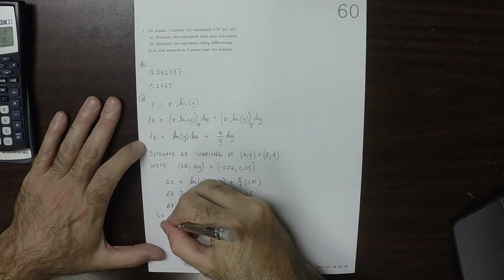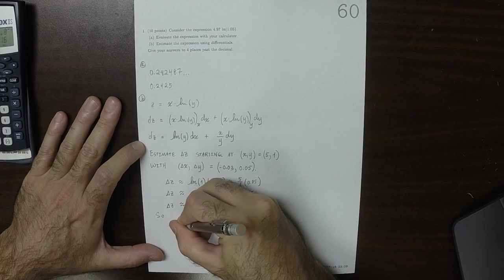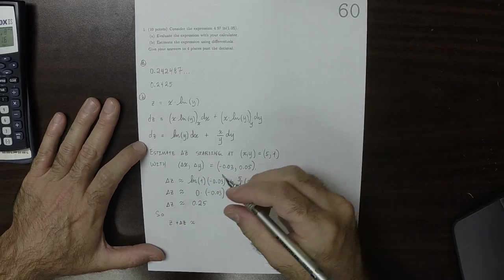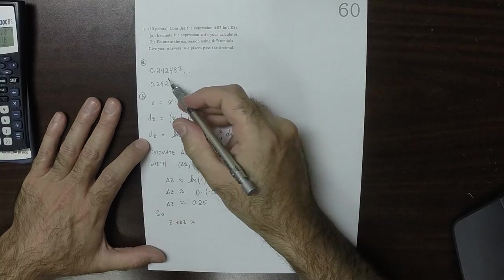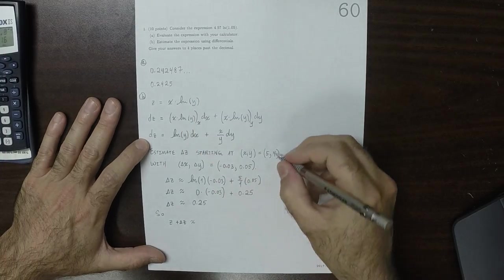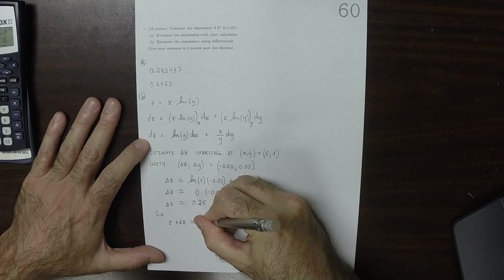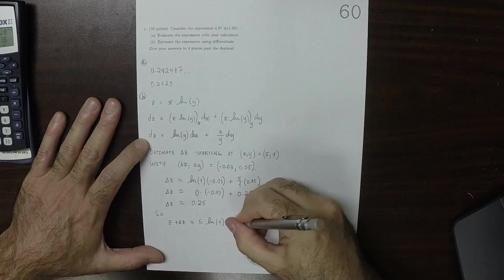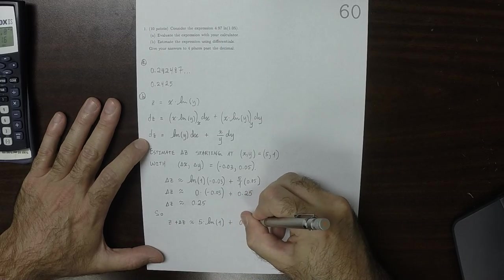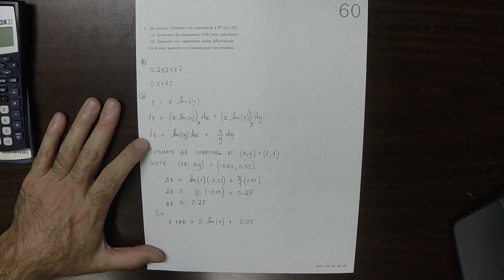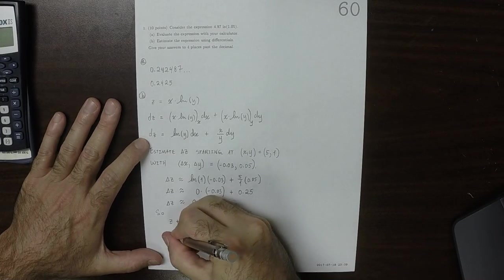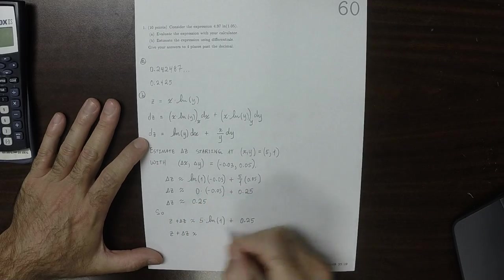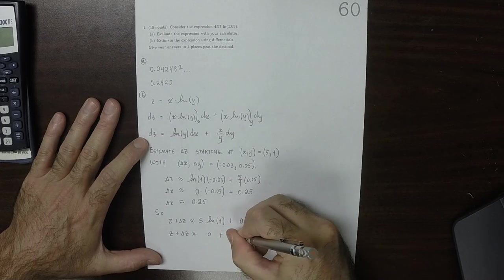So our estimate for the new value of z plus delta z, that is approximately, if we plug in x is 5, so 5 times the log of 1, so that's the z value, and then plus 0.25. So that's the original z, and that's the change in z. Z plus delta z is approximately, well, that's 0 plus 0.25.